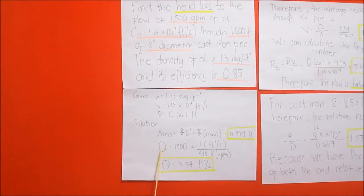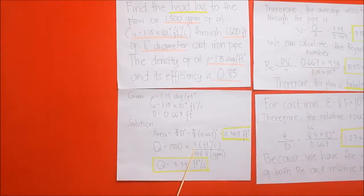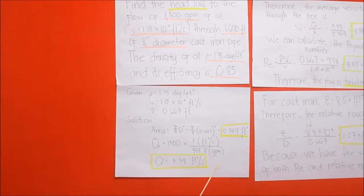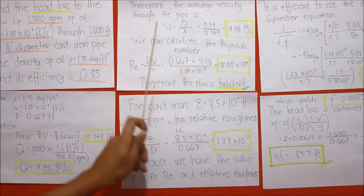We can now find the discharge where discharge equals 1,500 times 1 over 448.8 GPM, where the answer is 3.34 square feet per second.